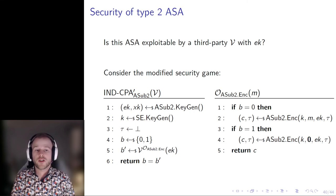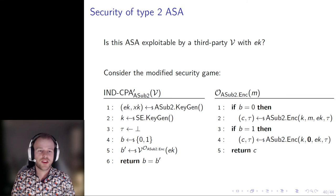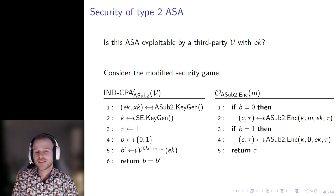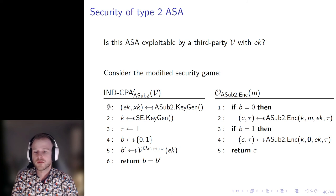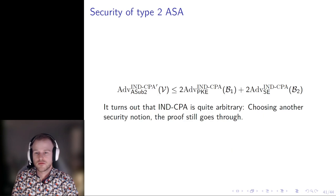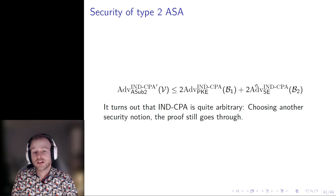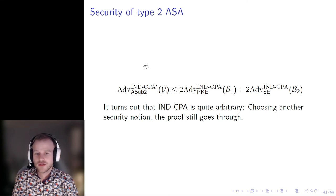We also consider the second requirement for the type 2 asymmetric ASA: that the ASA is not exploitable by a third party in possession of EK. To show this, we demonstrate that the ASA itself is still a secure encryption scheme, considering NCPA security. We define a modified security game NCPA-prime to handle the key generation and state required for ASA2.enc, and show that ASA2's security is bounded by the NCPA security of the PKE scheme and the NCPA security of the underlying symmetric encryption scheme. The choice of NCPA is somewhat arbitrary — the proof goes through with other security notions modified accordingly.